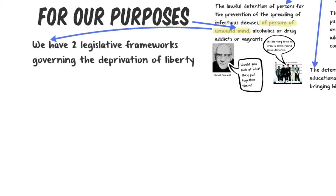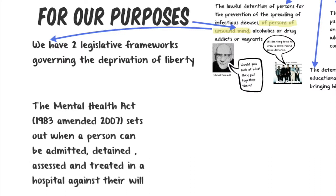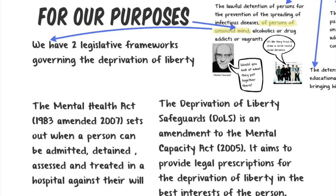We have two legislative frameworks in the British Isles governing the deprivation of liberty for people of unsound mind. The first and most obvious, the longest standing one, is the Mental Health Act — we're going back as far as the 1983 Act, which is the currently active form. It's been amended subsequently as part of that series of review. It sets out when a person can be admitted, detained, assessed and treated in a hospital against their will. We also have the Deprivation of Liberty Safeguards, or DoLS. The key difference is: the Mental Health Act tells us when the state can take away a person's liberty, while DoLS tells the depriving agent what they must do to safeguard the freedom of the individual.